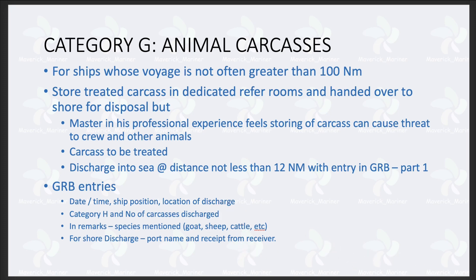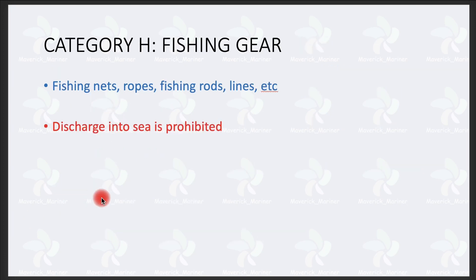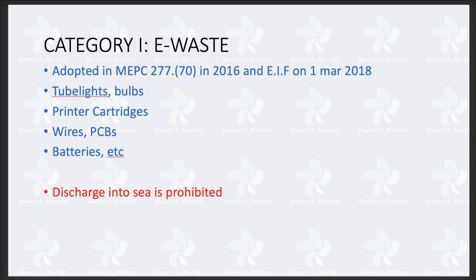Category H — fishing gear. This includes fishing nets, fishing ropes, fishing rods, fishing lines. Disposal of these into sea is not allowed because these things are a major threat to the marine environment nowadays. That is why disposal of fishing gear into sea is not allowed.